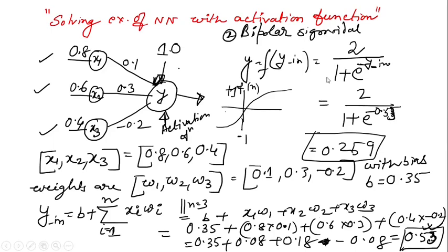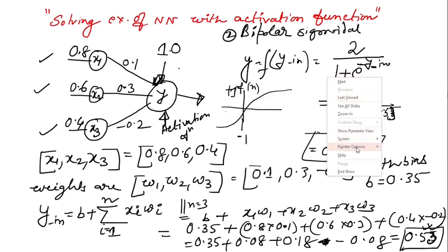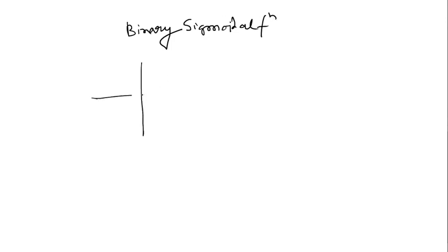And in case of binary sigmoidal function, just now I have shown you. It will be for binary sigmoidal function, it will go like this. So it is 1, it might be 0. And then as I said, this is, the output is 0.53. So it will be like